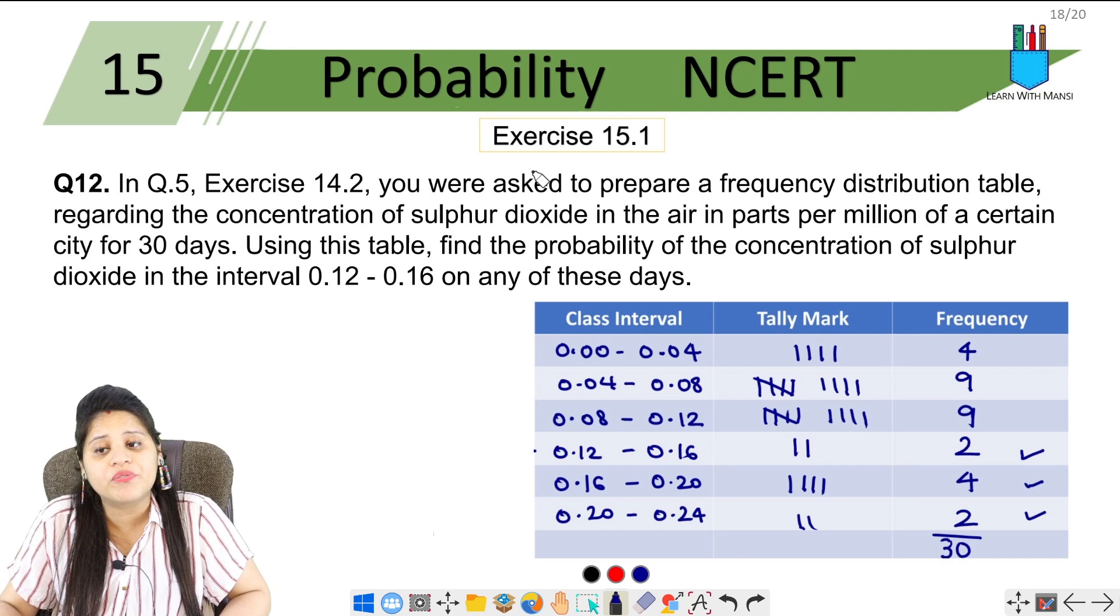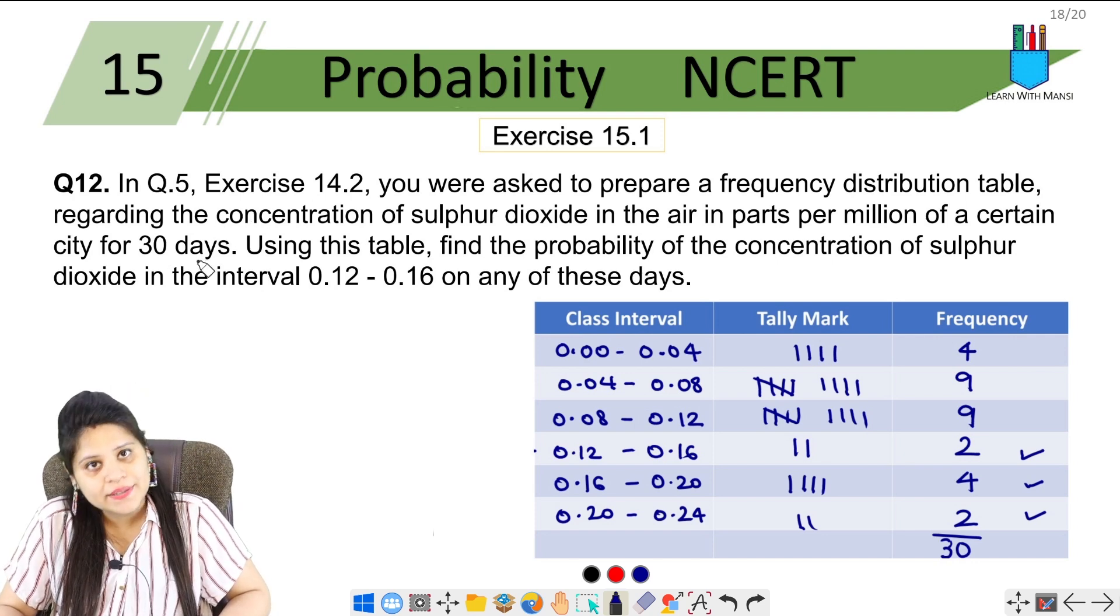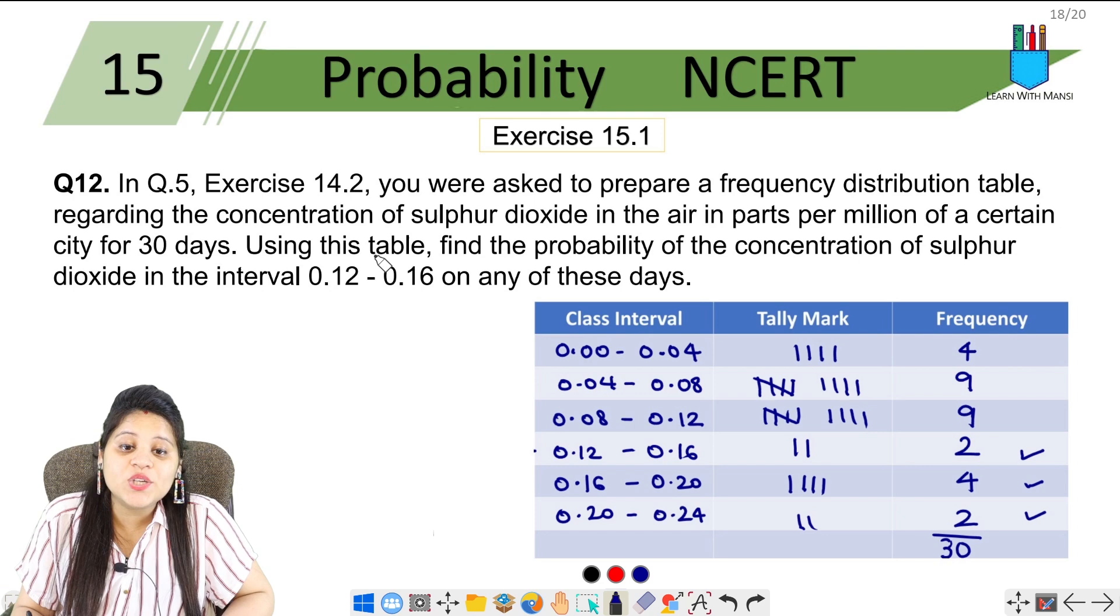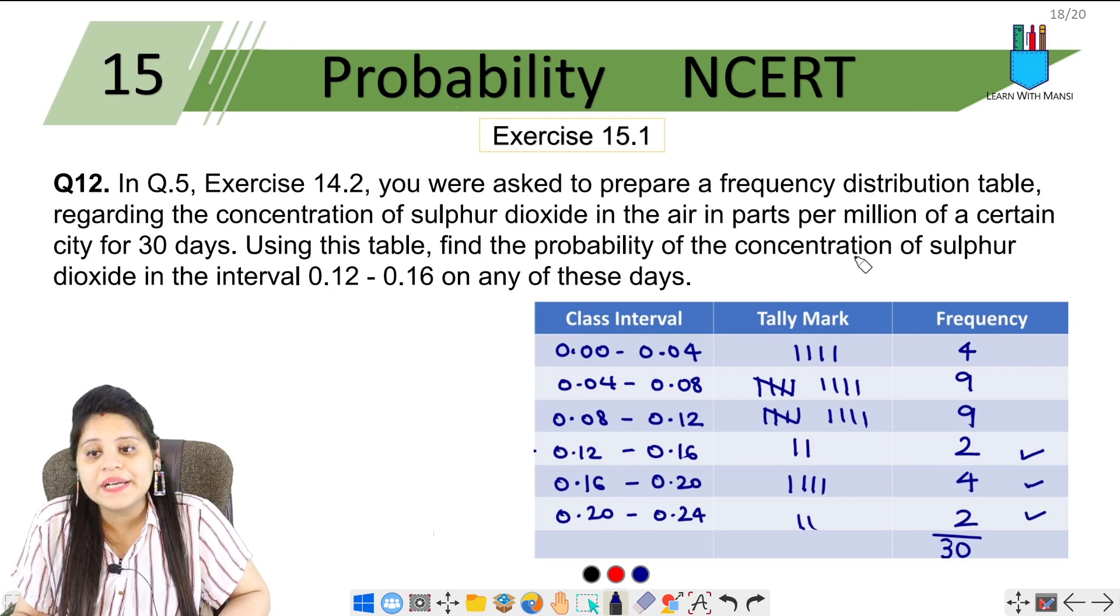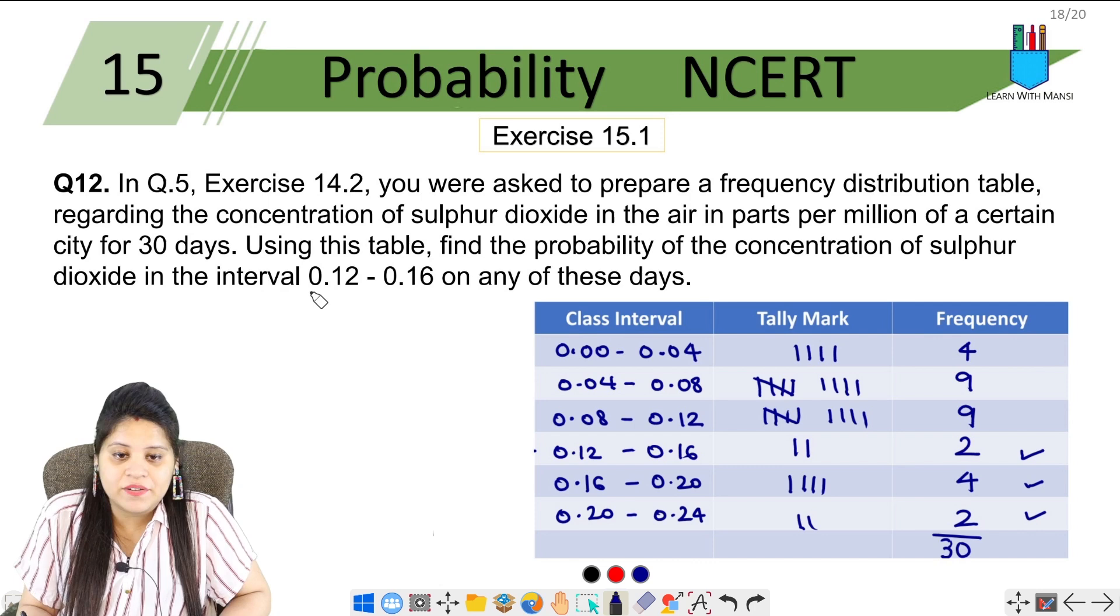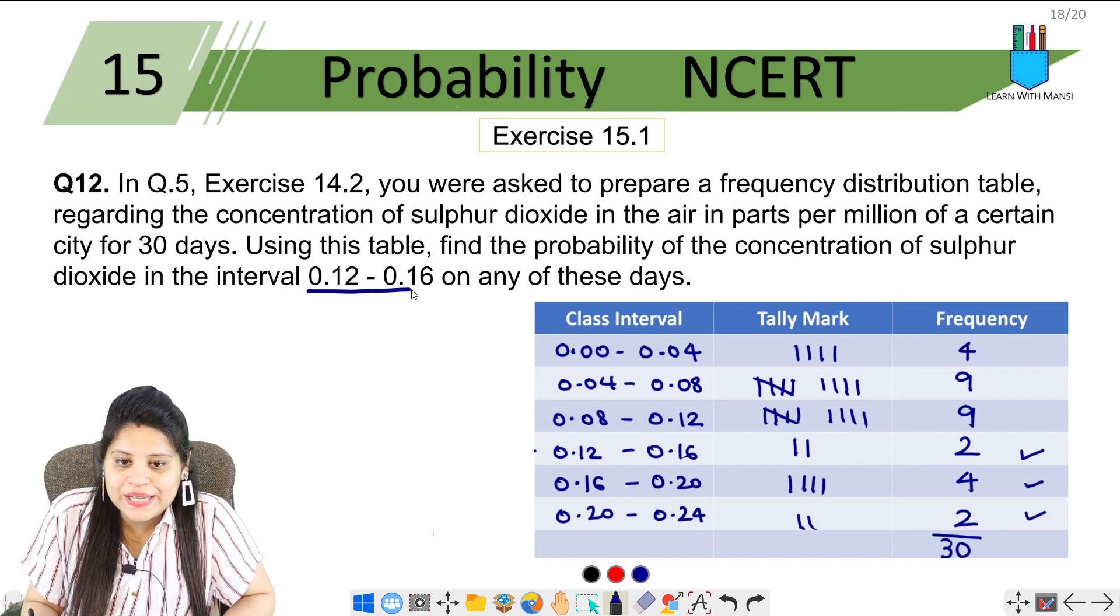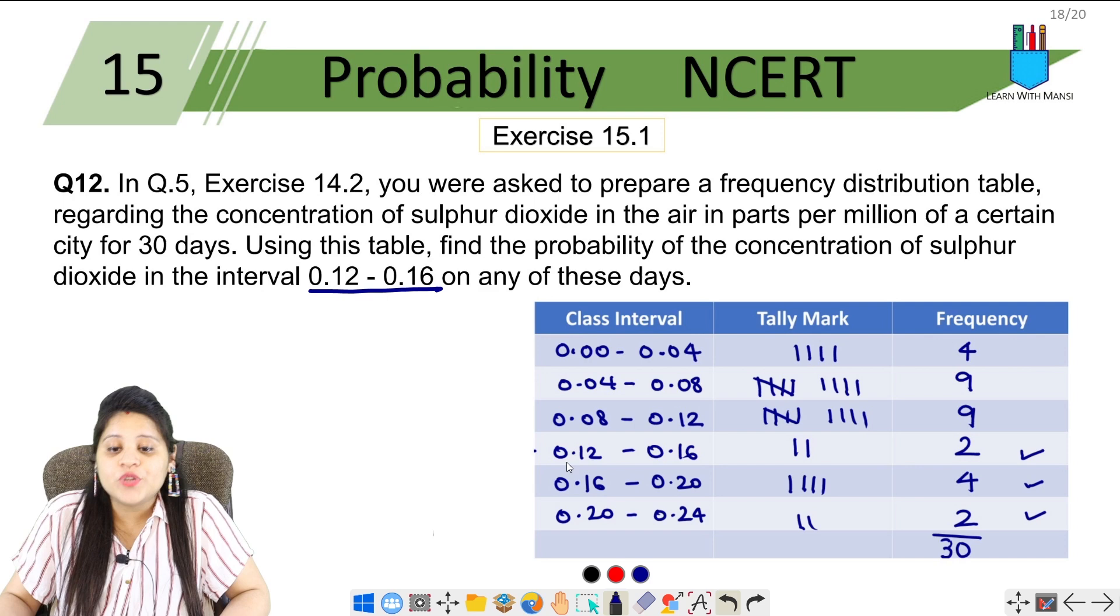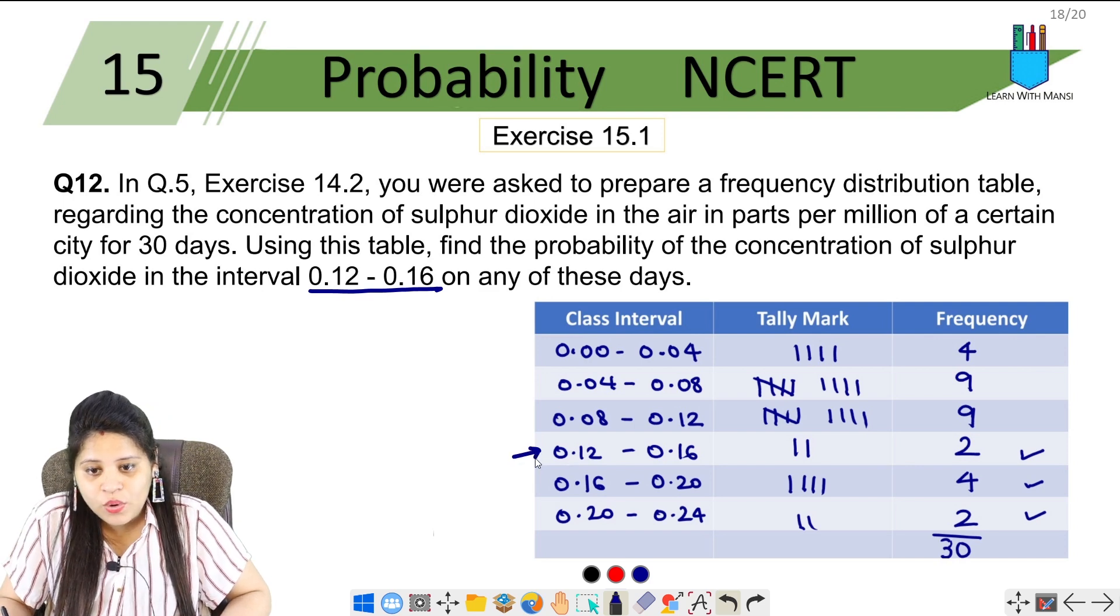In parts per million of a certain city for 30 days. The data for 30 days had to be classified. Using this table, find the probability of the concentration of sulfur dioxide in the interval 0.12 to 0.16 on any of these days.